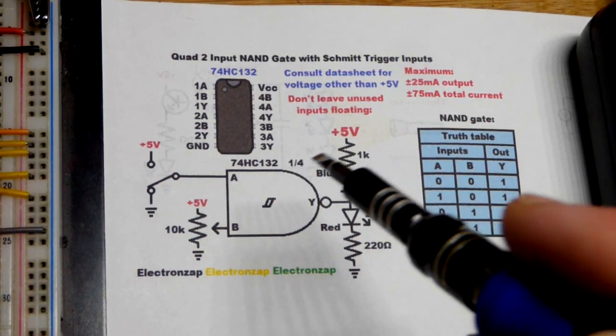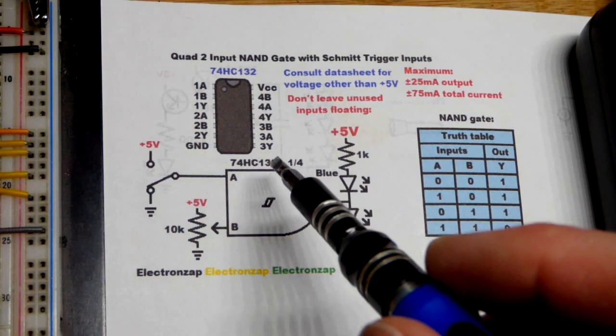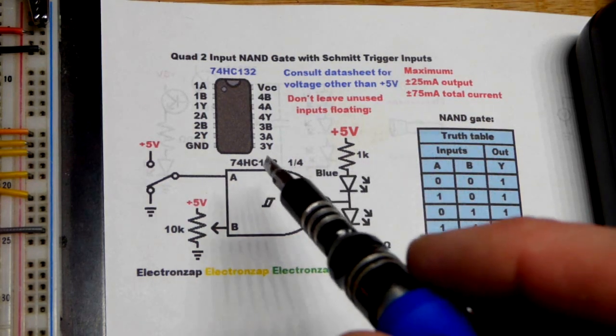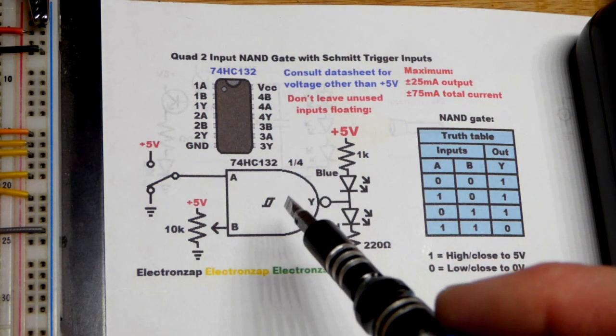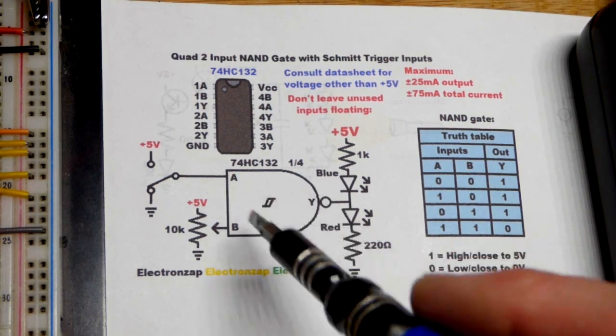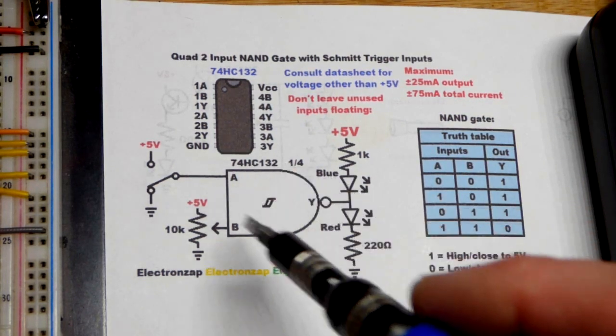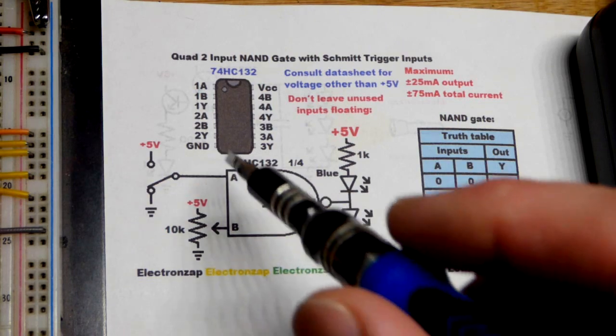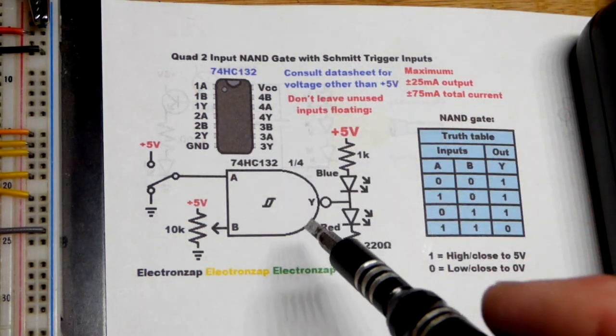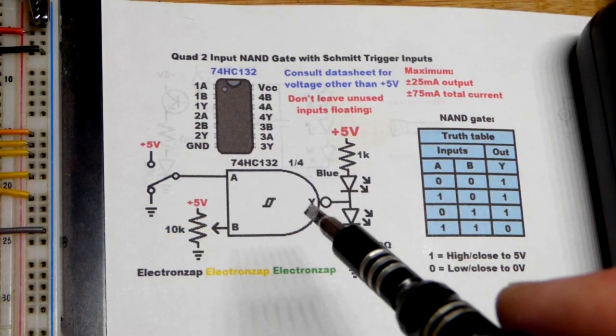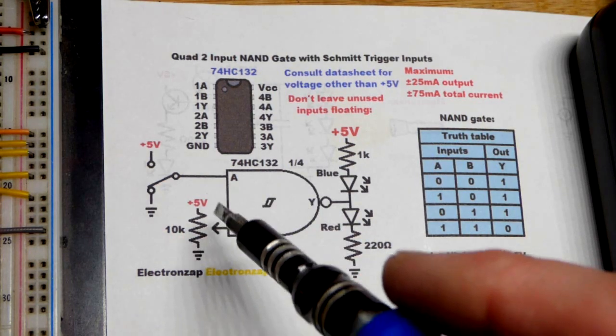Now when it comes to the diagram, I took the 74HC00 diagram and just had to make a few changes, changing the part number for one thing. I added a Schmidt trigger symbol to the NAND gate schematic symbol because this has Schmidt trigger inputs. So we've got to add that there so we know when we look at a schematic, it will have Schmidt trigger inputs.